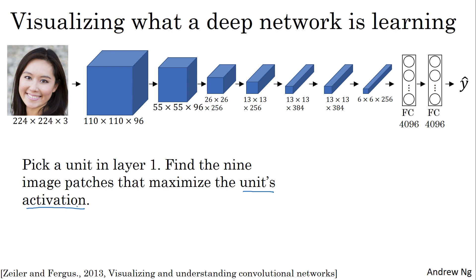A hidden unit in layer one will see only a relatively small portion of the neural network. So if you visualize what activates that unit, it makes sense to plot just a small image patch, because that's all of the image that particular unit sees. If you pick one hidden unit and find the nine input images that maximize its activation, you might find nine image patches like this — it looks like this hidden unit is looking for an edge or a line in a small region.